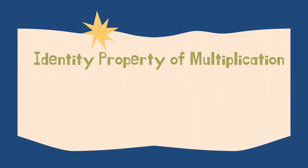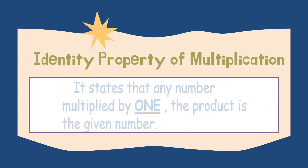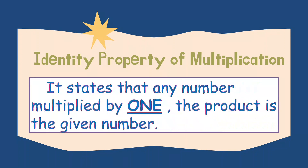That is what we call the identity property of multiplication. One is the identity element of multiplication. Any number multiplied by one, the product is the given number.